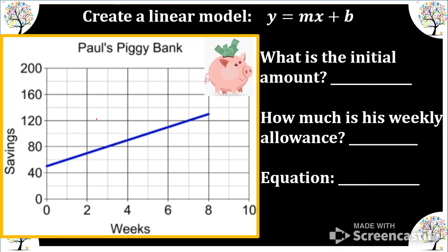Okay, here we have Paul's piggy bank. Our x represents weeks. And y represents total savings. What is the initial amount? Well, it's kind of hard to know exactly. So I am going to skip to the next question and find the rate of change.